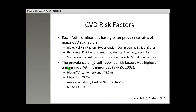Now that we've described unique CVD risk for racial-ethnic minorities, we will examine CVD risk factors that may explain some of these disparities. Racial-ethnic minorities have greater prevalence rates of major CVD risk factors, including biological risk factors such as hypertension, dyslipidemia, BMI, and diabetes; behavioral risk factors including smoking, physical inactivity, and poor diet; as well as socioeconomic risk factors such as education, poverty, and social connections. The prevalence of greater than two self-reported risk factors was highest among racial-ethnic minorities according to the Behavioral Risk Factor Surveillance Survey.